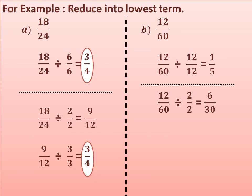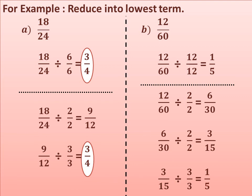6 upon 30 — both are even numbers, so it is divisible by 2. Dividing 6 upon 30 by 2 gives 3 upon 15. Then dividing 3 upon 15 by common factor 3 gives 1 upon 5, which is the lowest term because 1 and 5 have no common factor other than 1. We get the same answer both ways, so you can use either method to reduce a fraction to its lowest term.